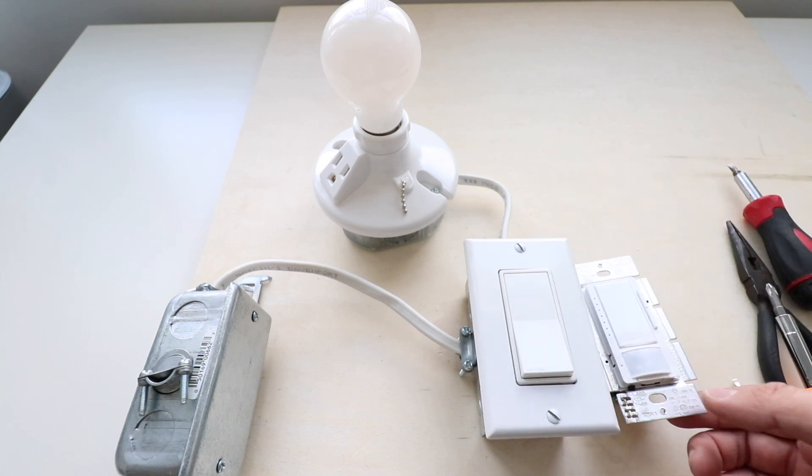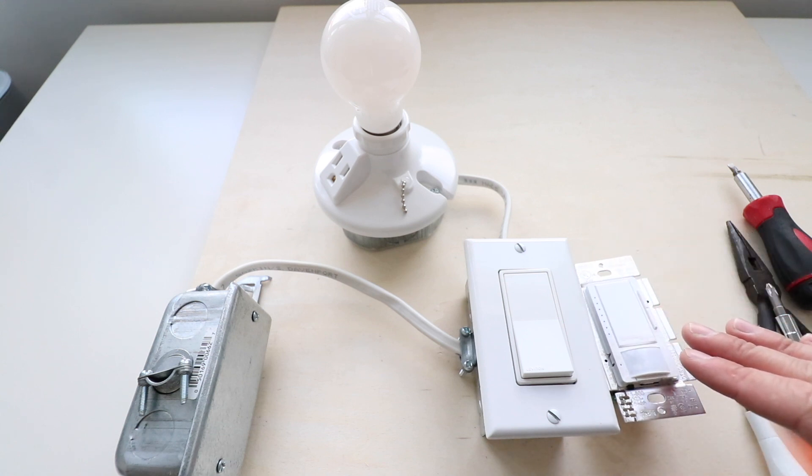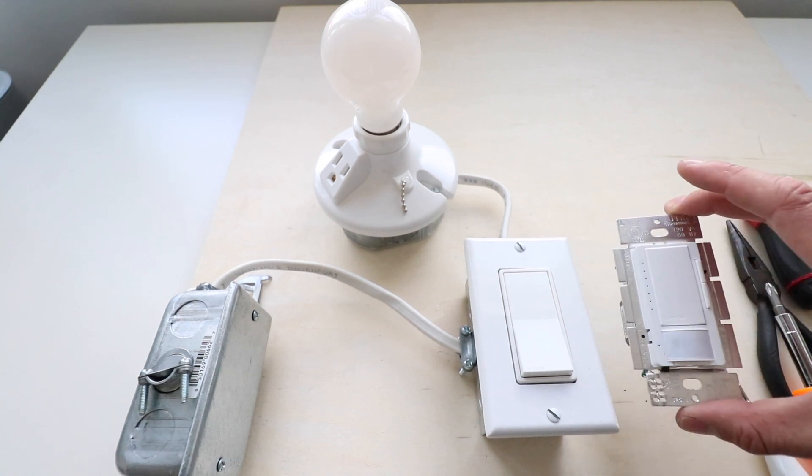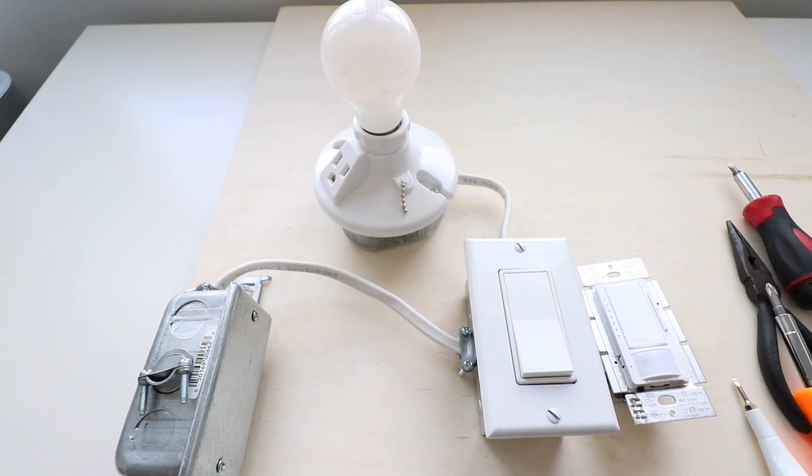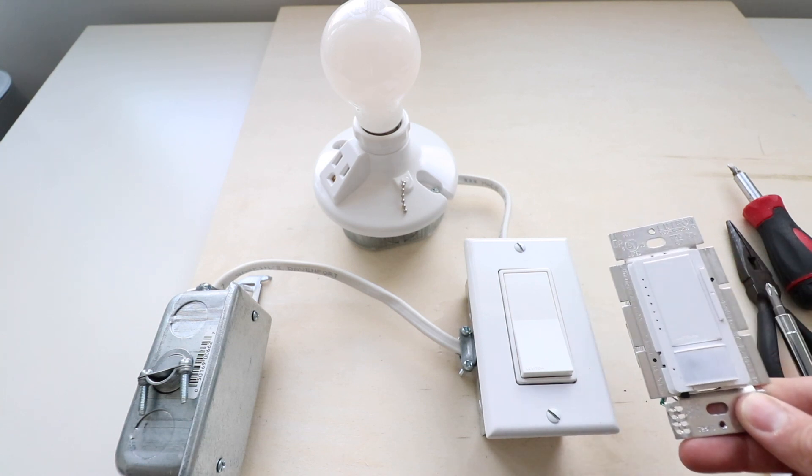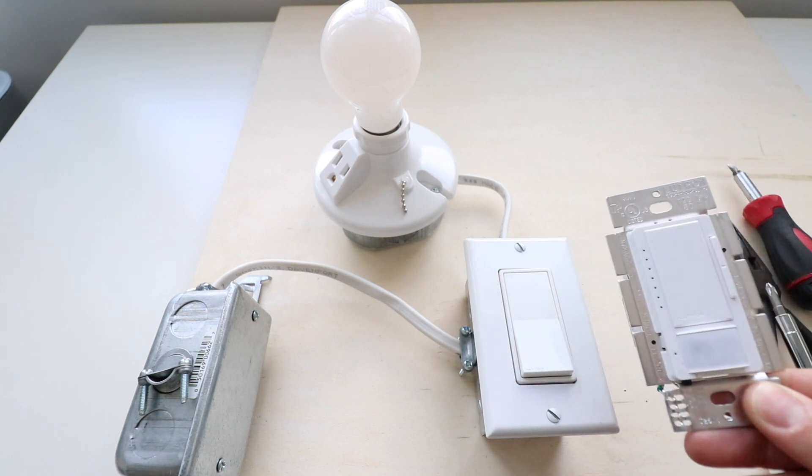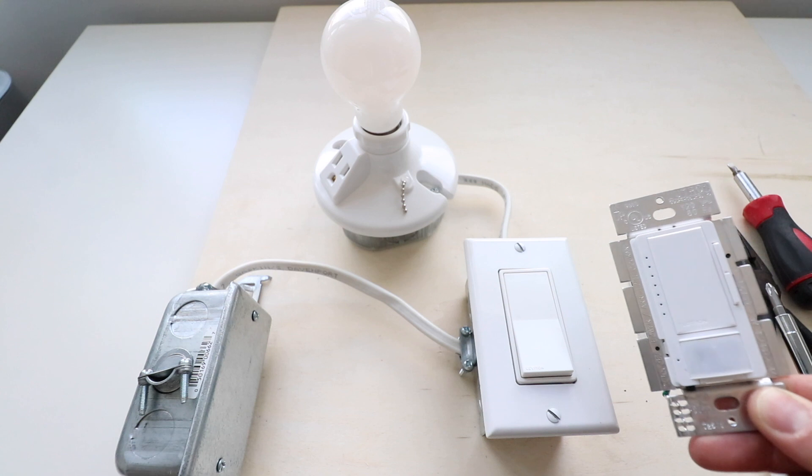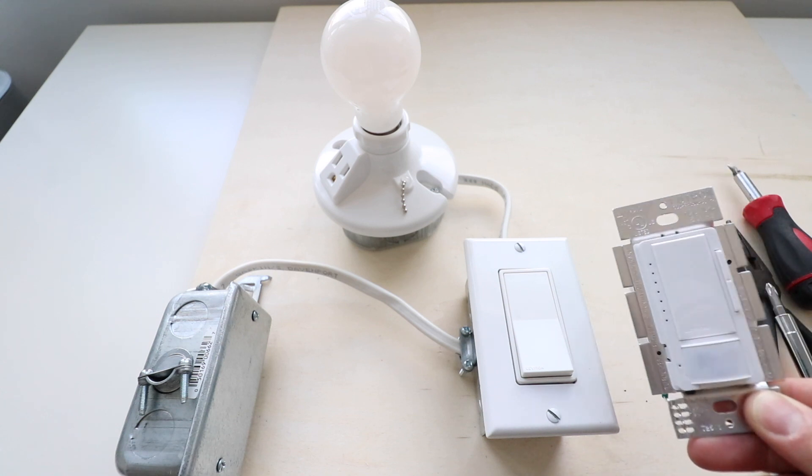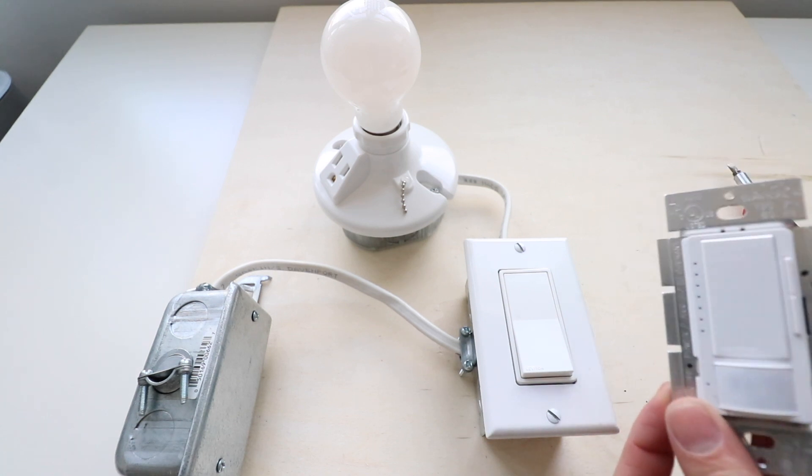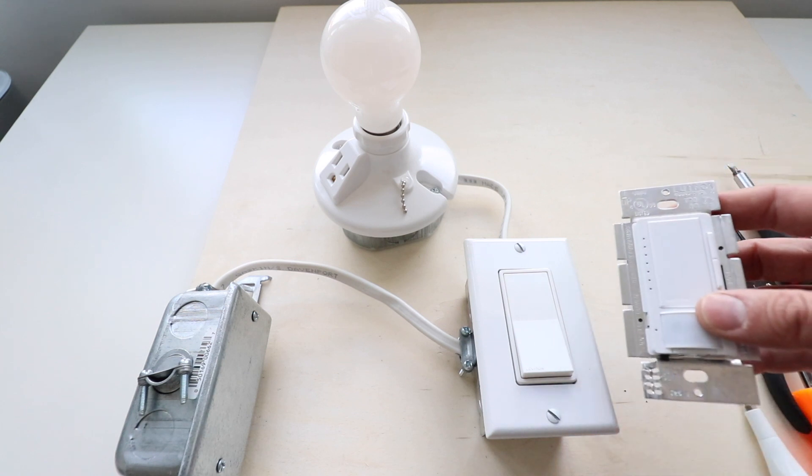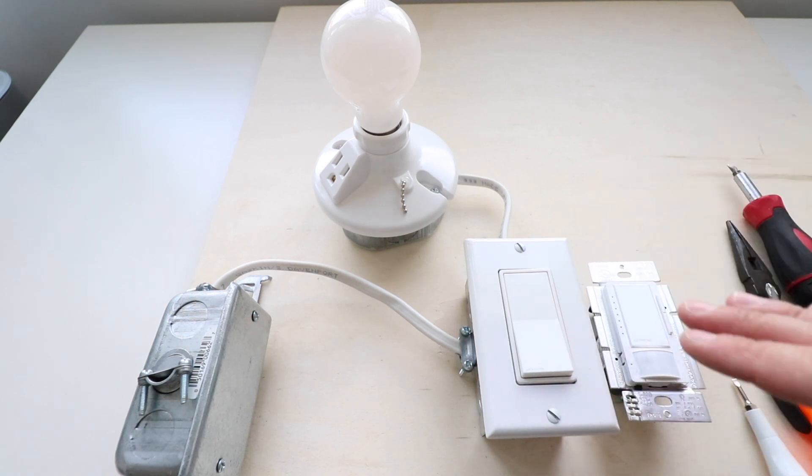We've just got a regular light switch here and the reason that we're going to do this is because some states require you now for current energy code to have a motion sensor light switch that will automatically turn off after a certain amount of time. Now this particular motion sensor light switch is a Lutron Maestro occupancy sensor or motion sensor light switch and it also is a dimmer so you can adjust the dimming over here. So now we're going to get started installing this.